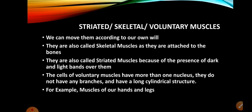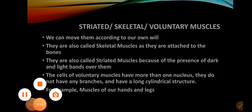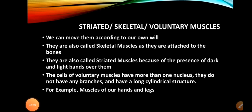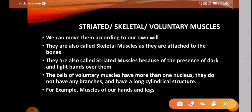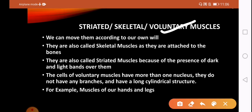Now let's come to the types of muscular tissue. The first type is voluntary muscles. Voluntary muscles are also known by two other names: striated and skeletal. From the word 'skeletal' you can understand that these are related to tough structures like bones.